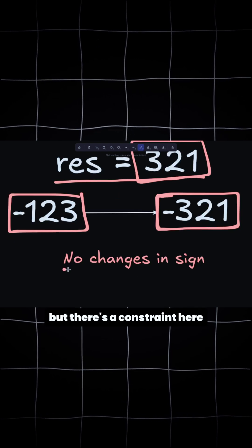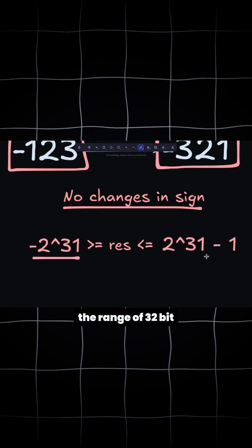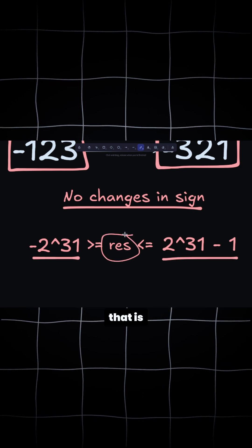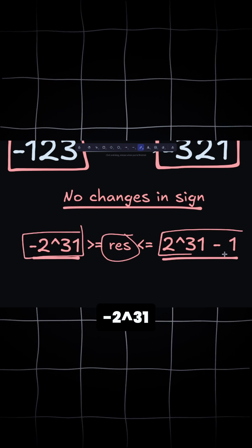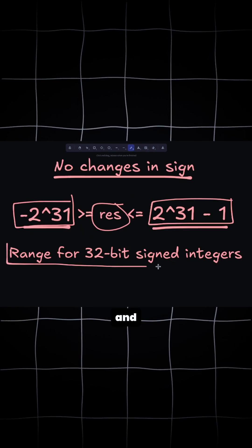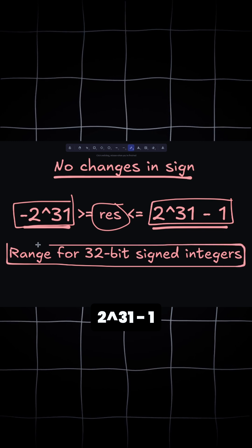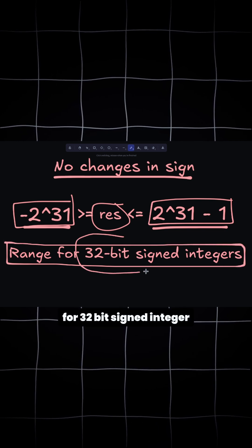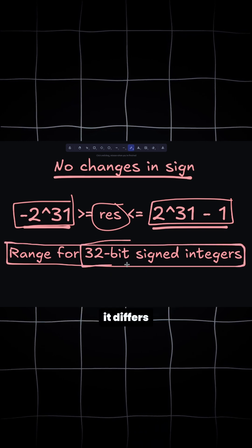But there is a constraint here. The resulting integer must be between the range of 32-bit signed integers. That is, it must be between the values of negative 2 to the power 31 and positive 2 to the power 31 minus 1. This is the range for 32-bit signed integers. For unsigned integers it differs.